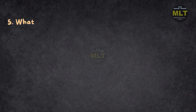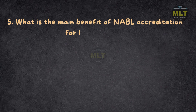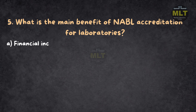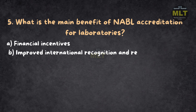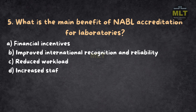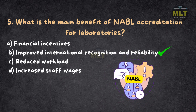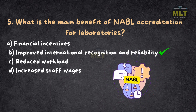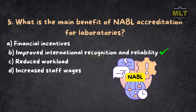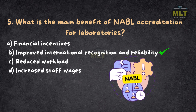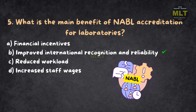Question 5: What is the main benefit of NABL accreditation for laboratories? a. Financial incentives. b. Improved international recognition and reliability. c. Reduced workload. d. Increased staff wages. Correct answer: b. Improved international recognition and reliability. NABL accreditation provides credibility and ensures laboratories meet global standards, enhancing their recognition and reliability for stakeholders.